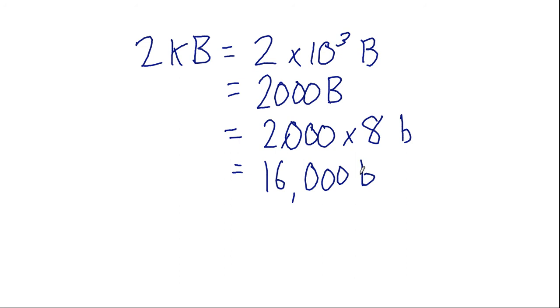But of course, if we use the other notation for the prefix k, where k was 2 to the power of 10, it would be slightly different. And you can check the answer, it would be equal to 16,384 bits.